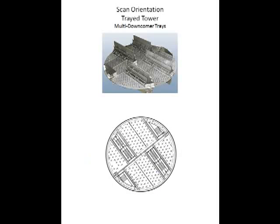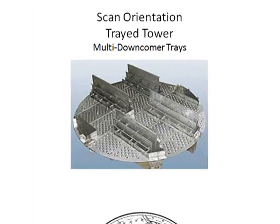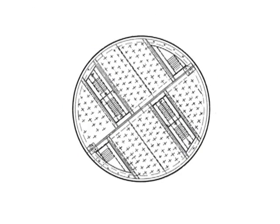This is an example of a gamma scan of a tower with fairly uncommon multiple downcomer type trays, as shown in the picture here and also reproduced in the plan view taken from the tower drawings.